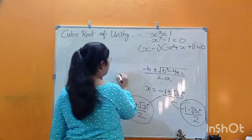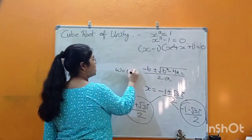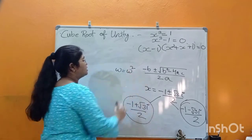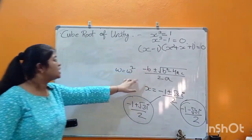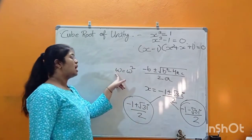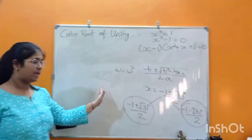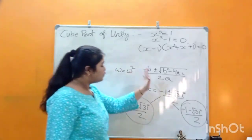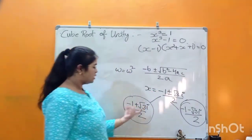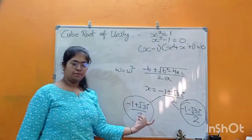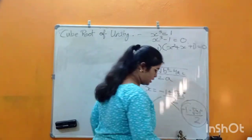If we take one of those roots as omega (ω) and then take its square, we get the other root — which is omega squared (ω²). So ω and ω² are just symbols for the two complex cube roots of unity. Omega and omega squared are simply symbolic names.